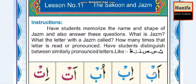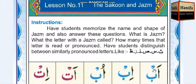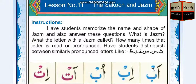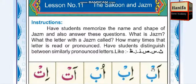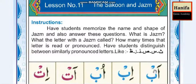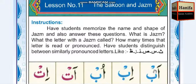The sukoon or jazam sign looks like what you can see here. This is basically the suqoon sign, also called jazam. A letter with a suqoon is known as sakin or jazam. Whenever this symbol comes on any letter, we have to join that letter with the previous letter, which carries a haraka.